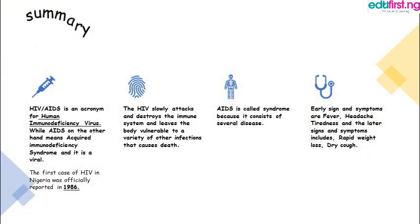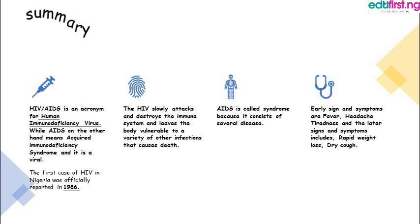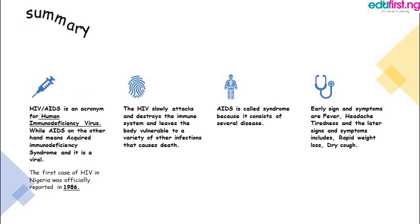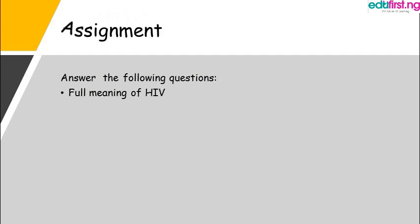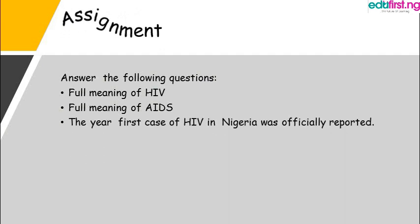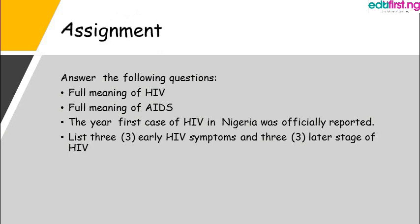In summary, HIV is an acronym for Human Immunodeficiency Virus, while AIDS means Acquired Immunodeficiency Syndrome and it is a viral disease. HIV slowly attacks the immune system and leaves the body vulnerable to a variety of infections and causes death, while AIDS is called a syndrome because it consists of several diseases. Early signs and symptoms are fever, headache, and tiredness, while later signs and symptoms include rapid weight loss and dry cough. By now you should have known the full meaning of HIV, the full meaning of AIDS, the difference between HIV and AIDS, the year that the first case of HIV in Nigeria was officially reported, the three early HIV symptoms, the three later stage of HIV, and why AIDS is called a syndrome.